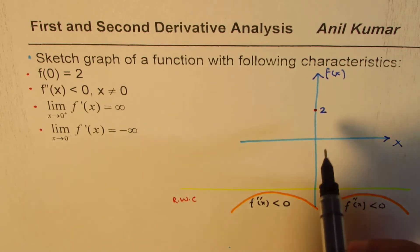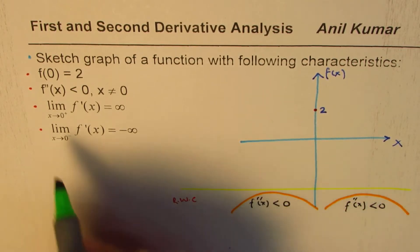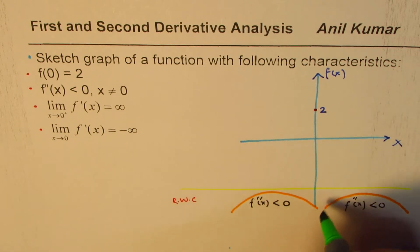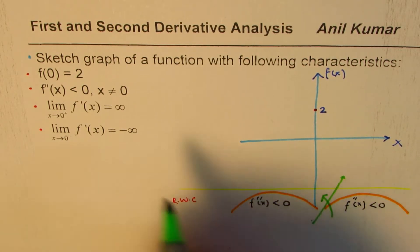It is kind of a line which should be like, if I draw a tangent, this is our 0. If I draw a tangent, it is kind of vertical but increasing. It's like this but increasing towards positive infinity. That is what it means.